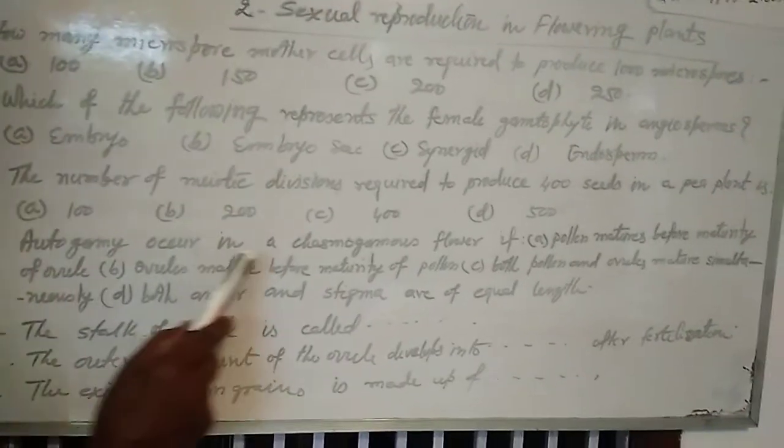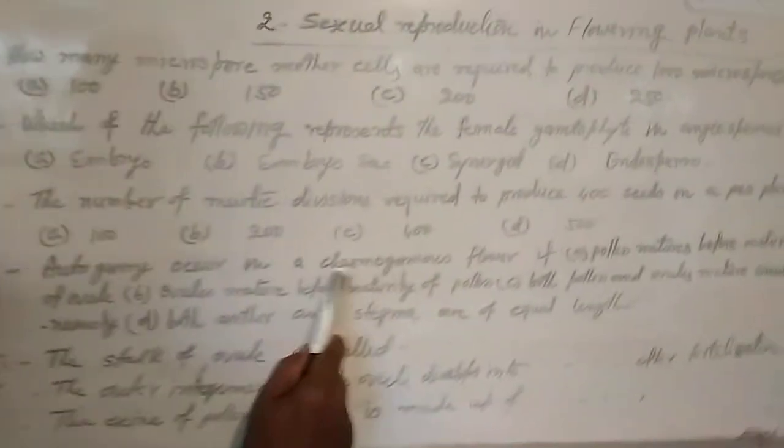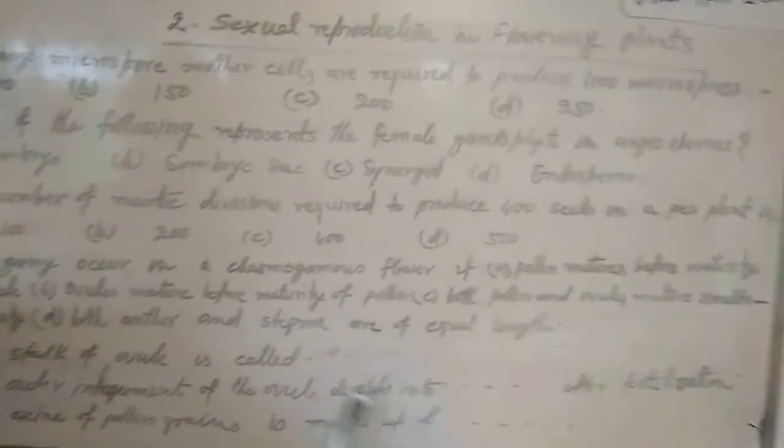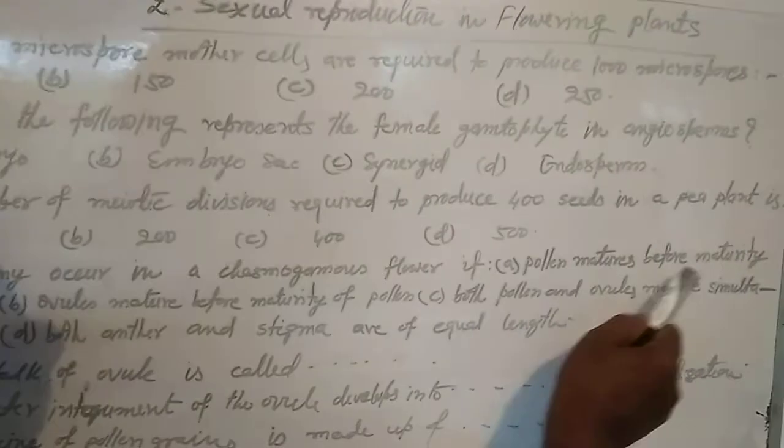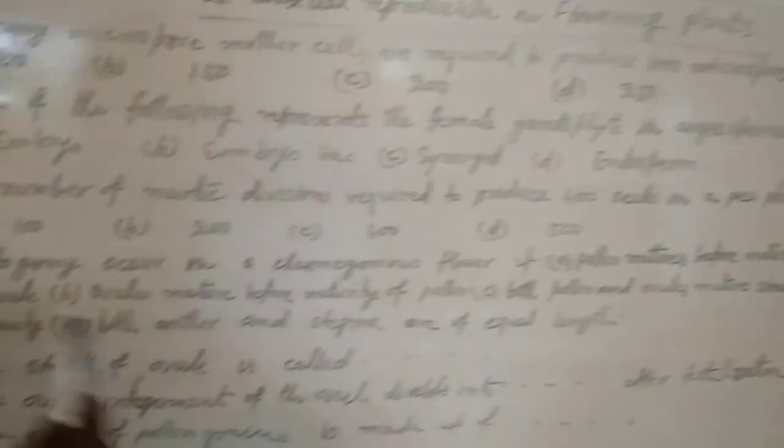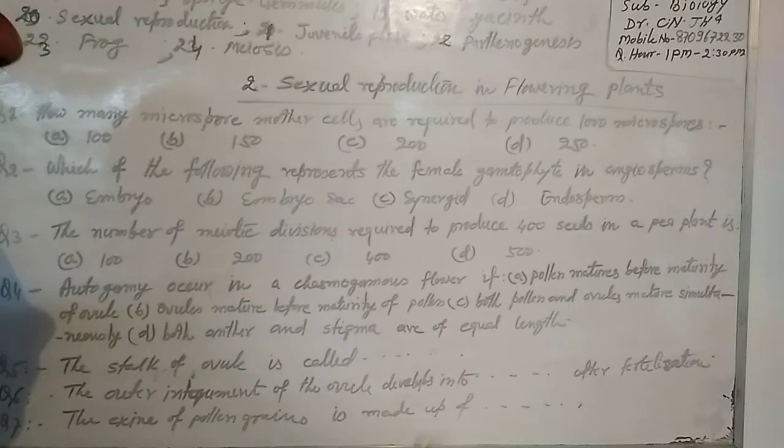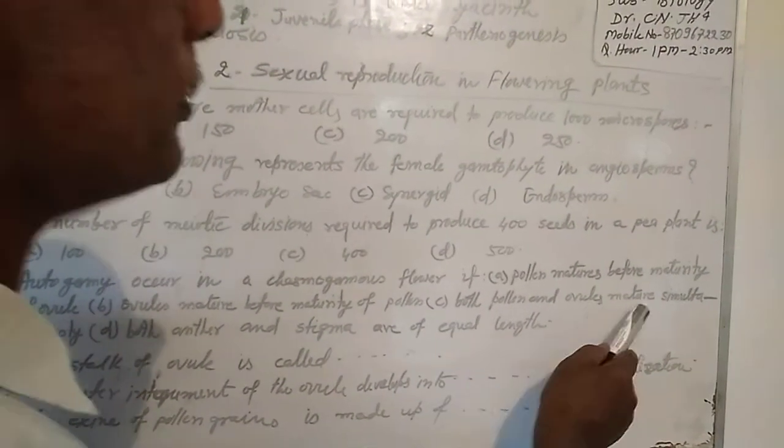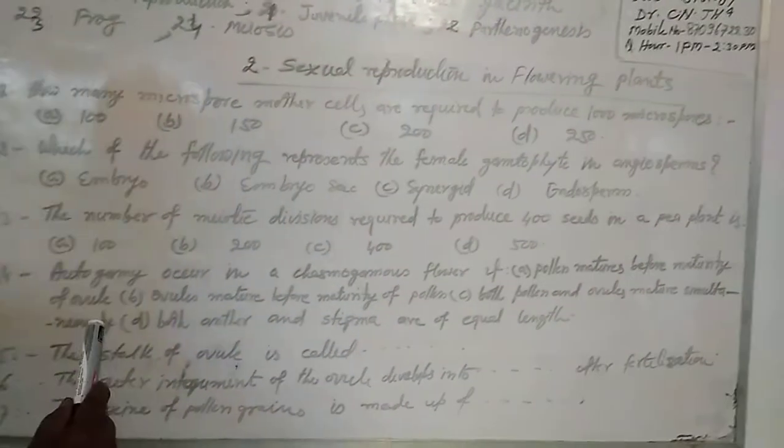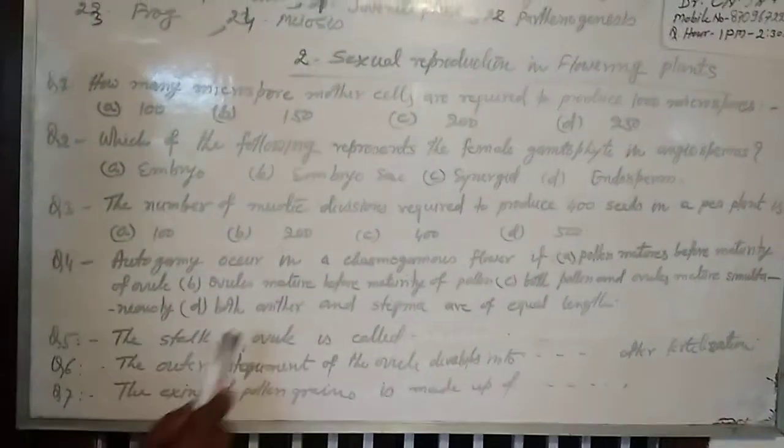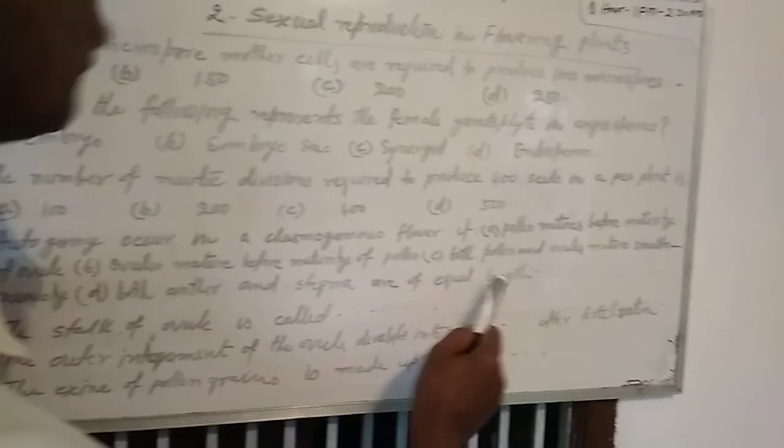Question 4. Autogamy occurs in a chasmogamous flower if A: pollen matures before maturity of ovule, B: ovules mature before maturity of pollen, C: both pollen and ovules mature simultaneously, D: both anther and the stigmas are of equal length.